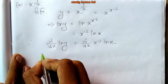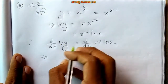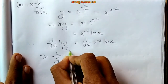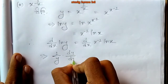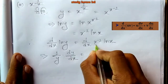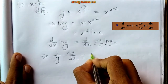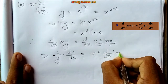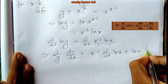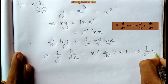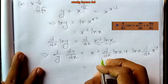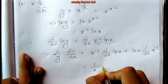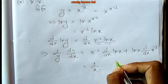On the left side, 1/y times dy/dx. On the right side, applying the product rule: d/dx of (x inverse times ln x). This gives us x inverse times d/dx of ln x, plus ln x times d/dx of x inverse.